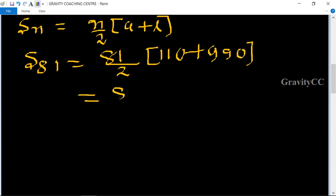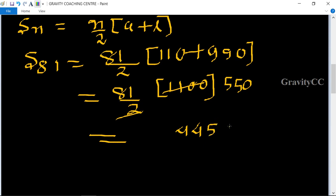This equals 81 upon 2 times 1100. So 1100 divided by 2 equals 550, and their product equals 44,550, which is the required answer.